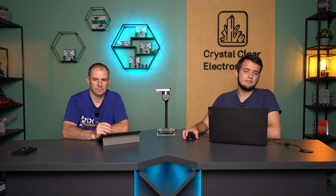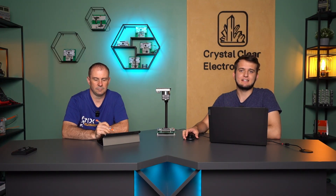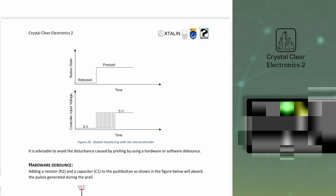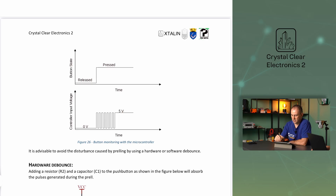This phenomenon is called prelling. We don't notice this in everyday life, but the controller can perform thousands of operations in a few milliseconds. In engineering practice this is a problem — for example, when we want to use a microcontroller to test a leading edge or trailing edge. You can see that pressing a button will produce several edges. This figure shows the detection of a leading edge when a button is pressed.